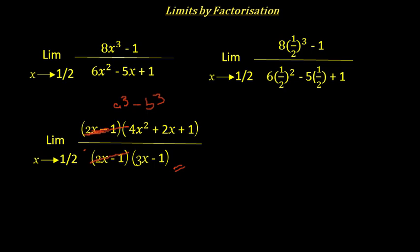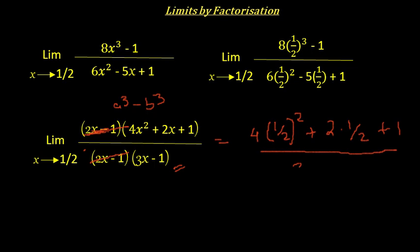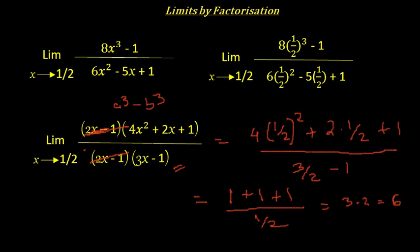Now let us substitute x = 1/2 into the simplified expression. Since all terms are positive, we should not get any 0/0 form. This becomes (4·(1/4) + 2·(1/2) + 1) / (3·(1/2) - 1) = (1 + 1 + 1) / (3/2 - 1) = 3 / (1/2) = 6. So the limit equals 6 as x tends to 1/2.